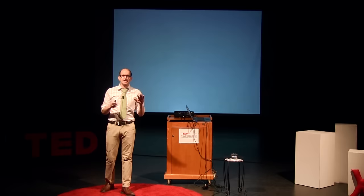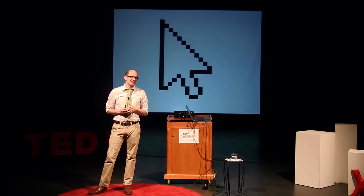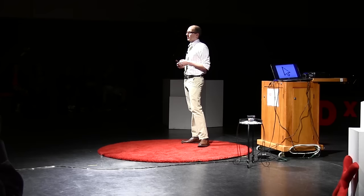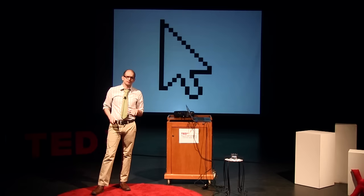Not even the geekiest programmer looks at the mouse cursor and says, 'Oh, 0, 1, 1, 0, 1, 1, 1 — my old friend.' No one thinks that. Because in computer science, one of the things that we want to do is create abstractions that totally hide the bits underneath, so we don't need to know what they are.